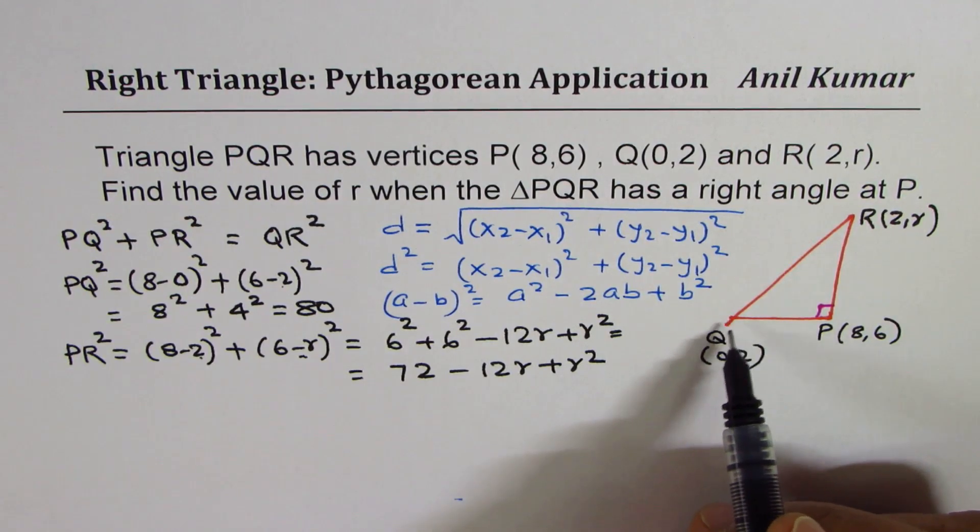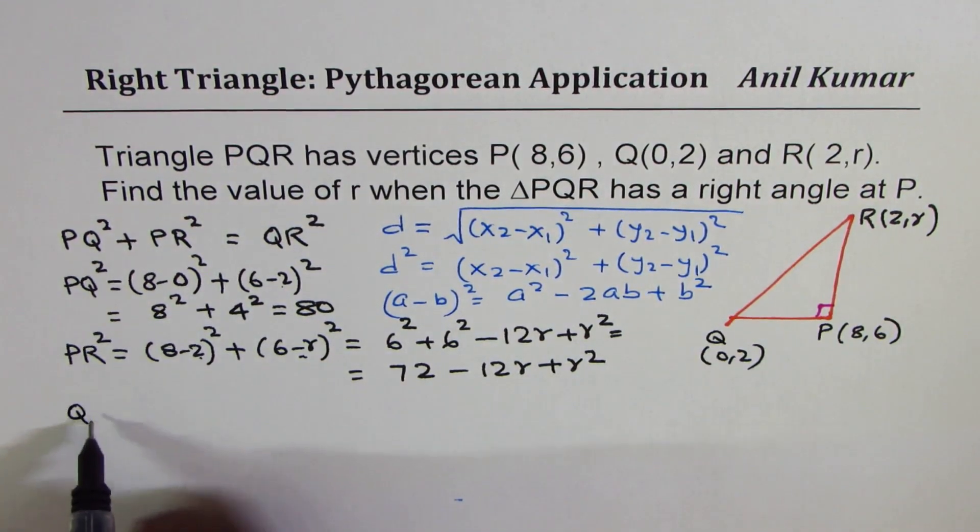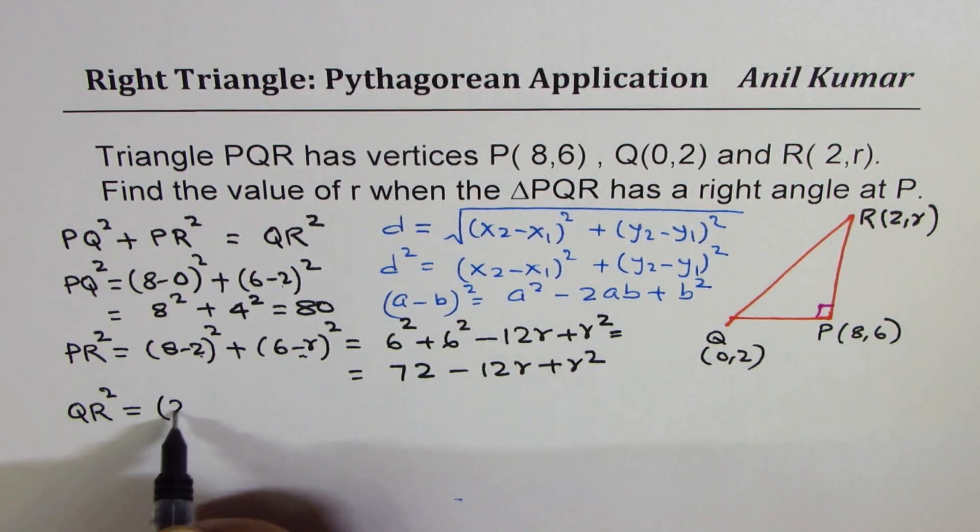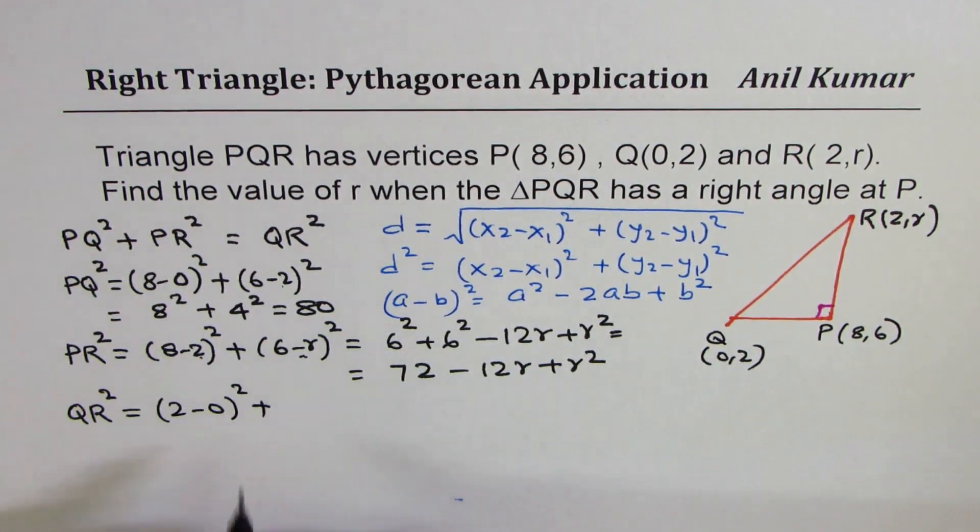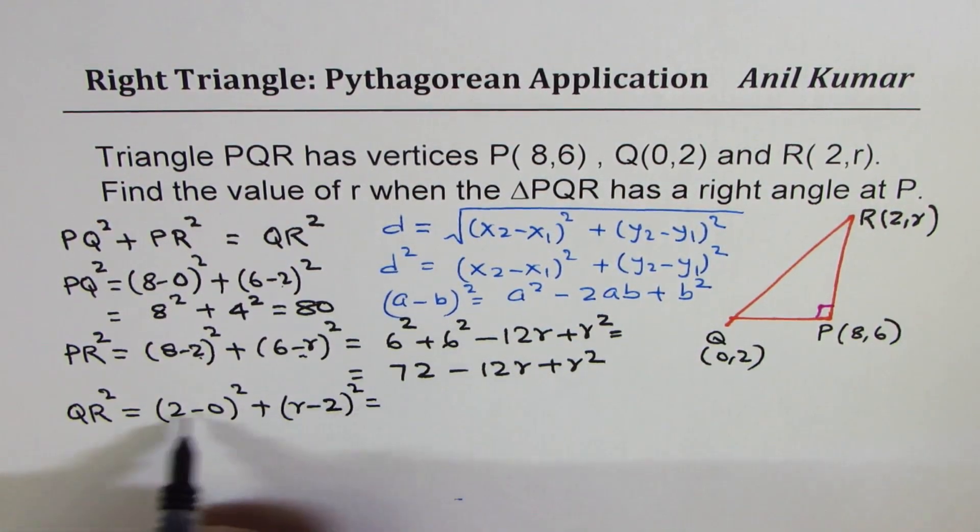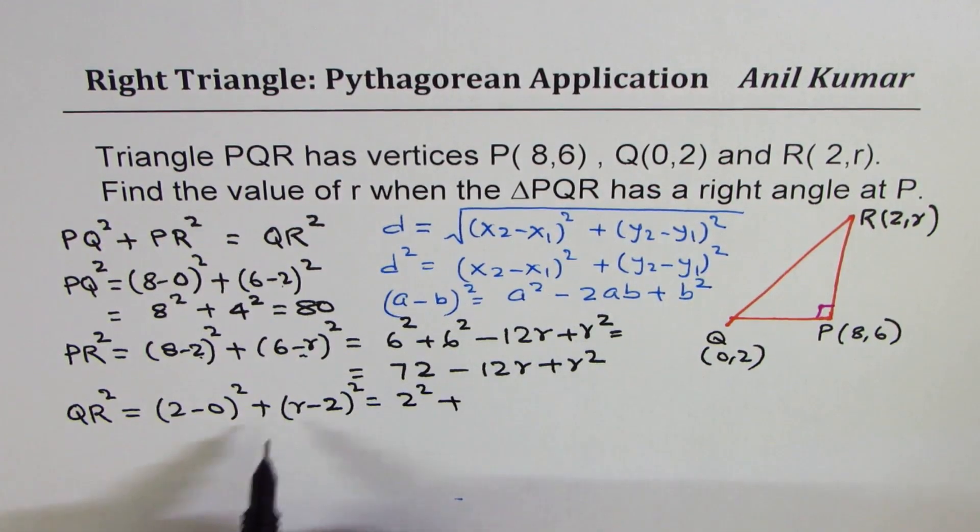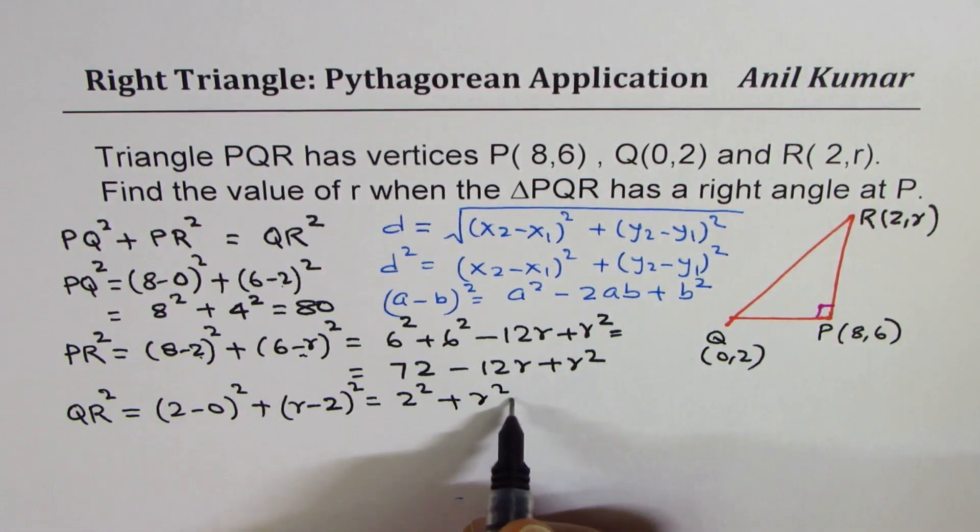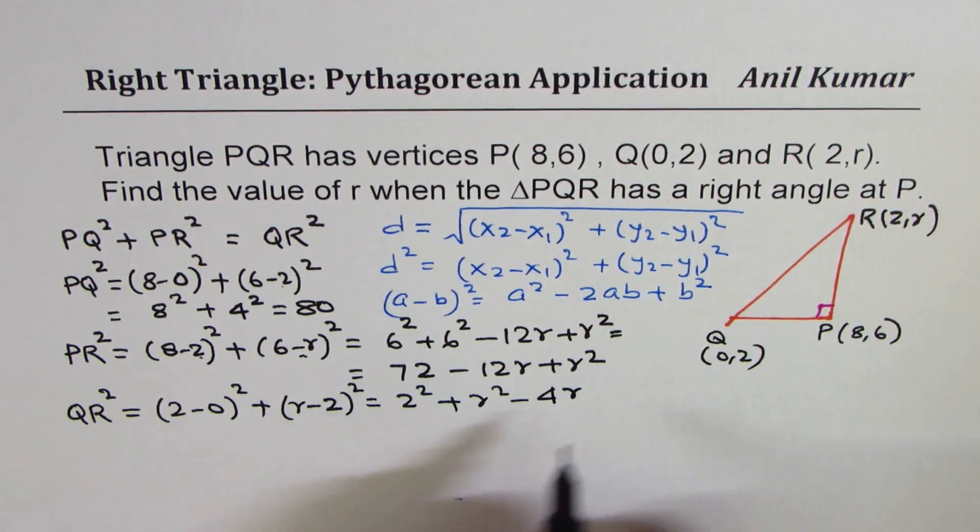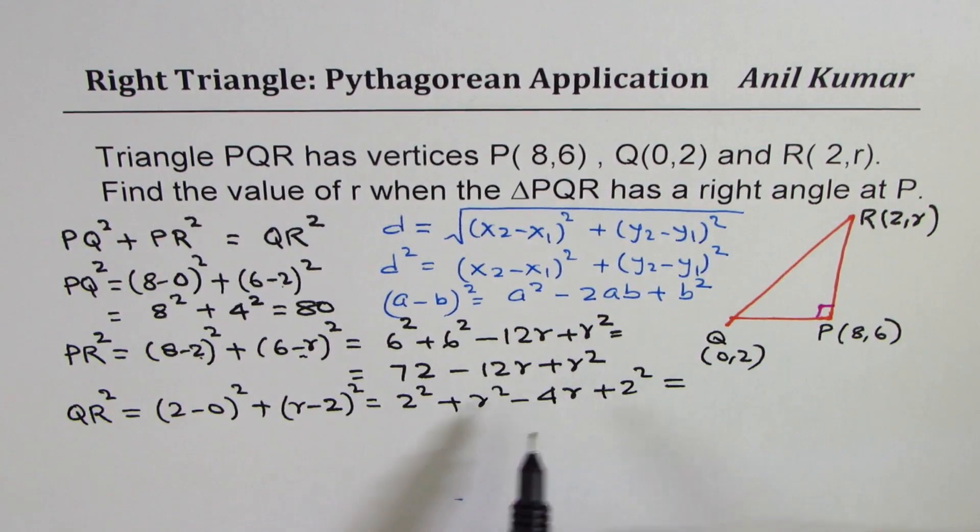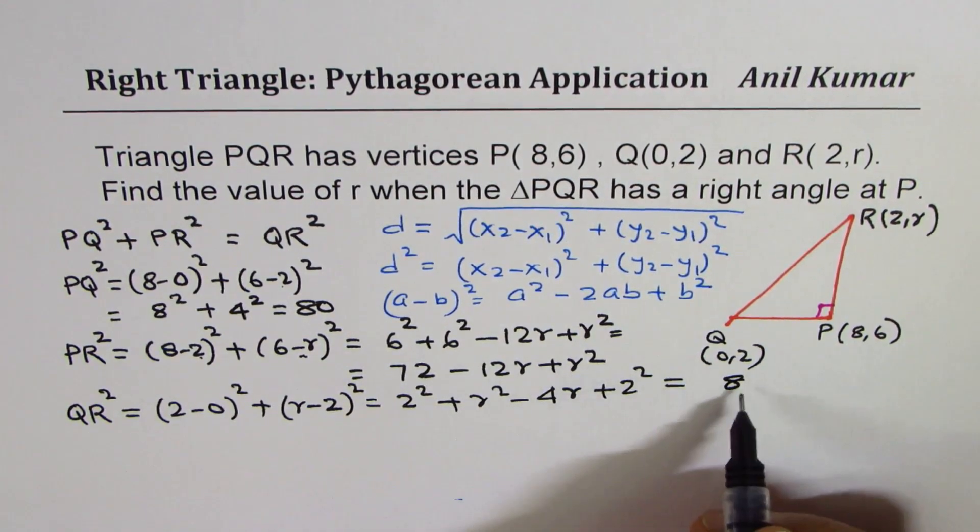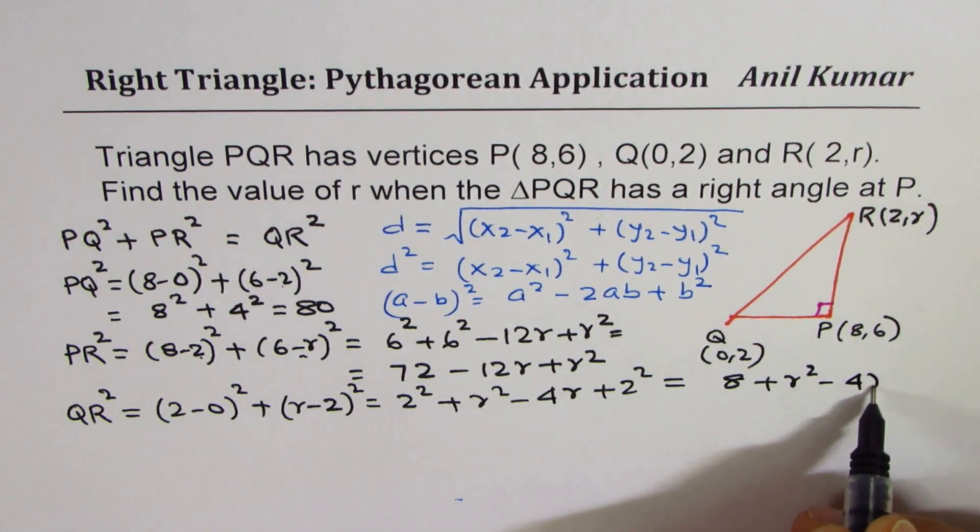What is QR²? So QR² will be equal to (2-0)² + (r-2)². That gives us 2² plus, again apply this formula, we get r² minus 2AB, which is 4r plus 2². So that gives us 4 plus 4 as 8. And we have plus r² minus 4r.